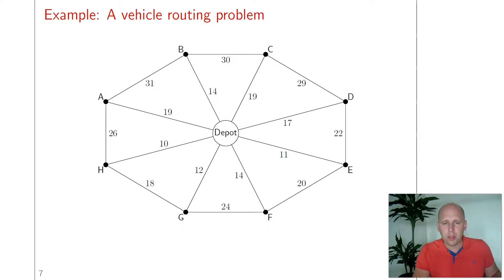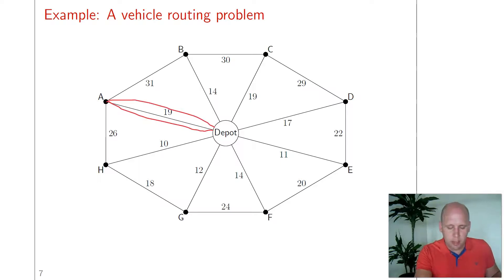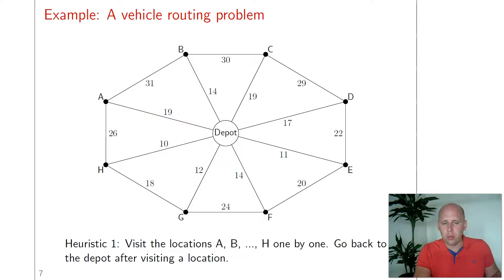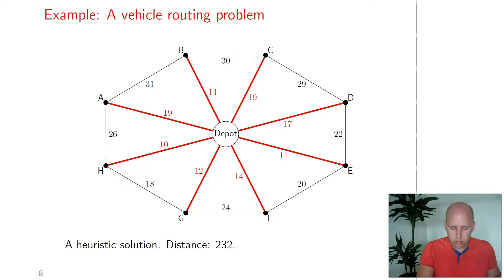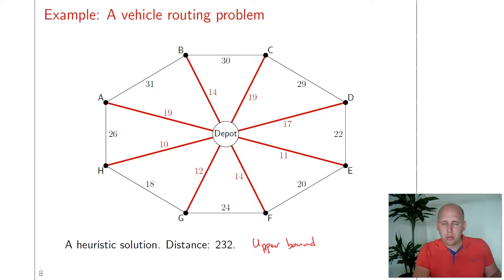Let's think about a possible heuristic. We are at the depot and would like to visit all eight locations. A very simple heuristic is to first go from the depot to A and then go back, then go to B and go back, and so on — visiting all eight locations one by one and returning to the depot after each visit. The total distance is 19 plus 19 plus 14 plus 14 and so on, giving a distance of 232. This is a solution but not the optimal one. Since this is a minimization problem, better solutions have a lower distance, and this distance of 232 is an upper bound.